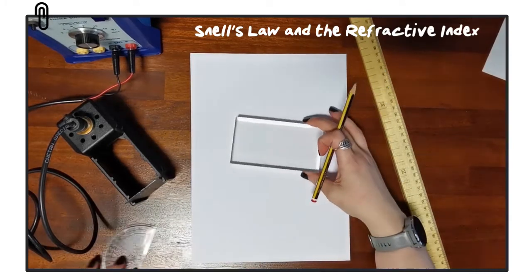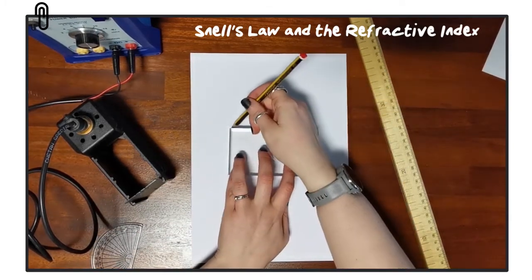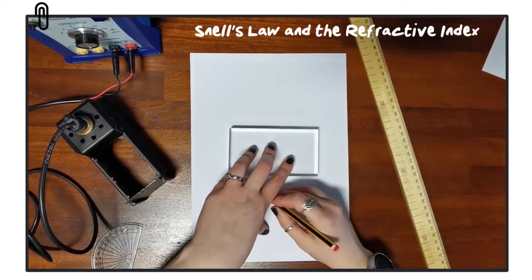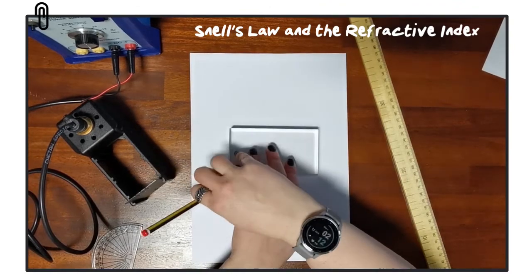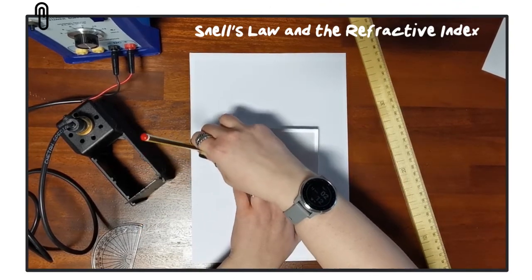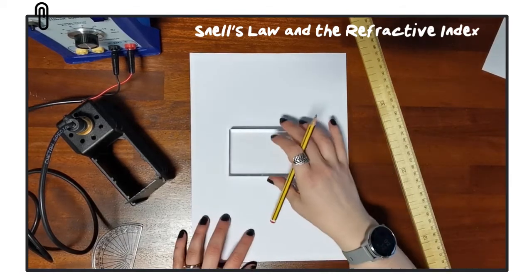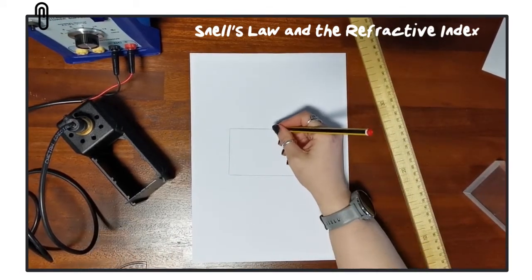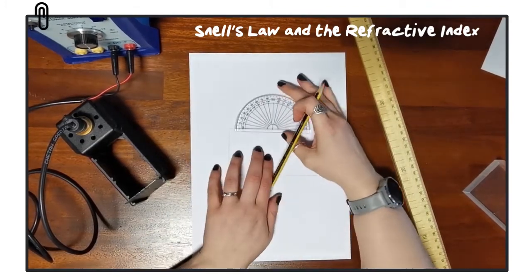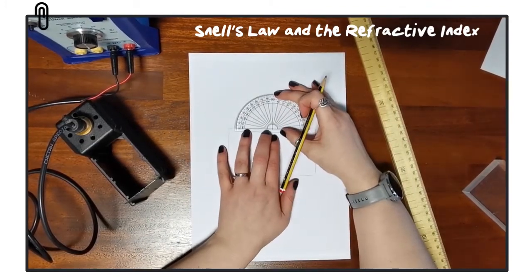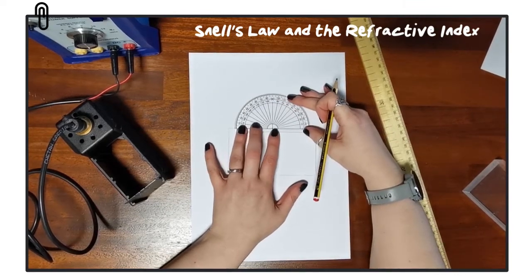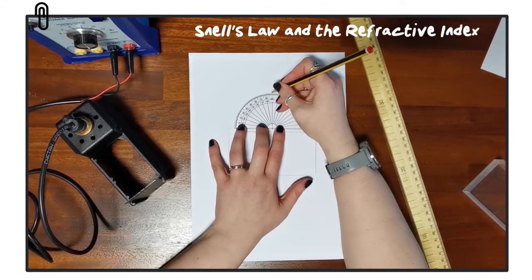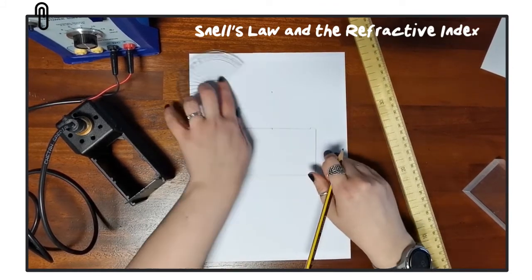The first step is to place the block in the center of the page and trace around it with a pencil. This is important because throughout the experiment we will need to remove the block so we can draw the path of the light rays. We then remove the block and add the normal — choosing a point along the long edge and drawing a line 90 degrees to the boundary.